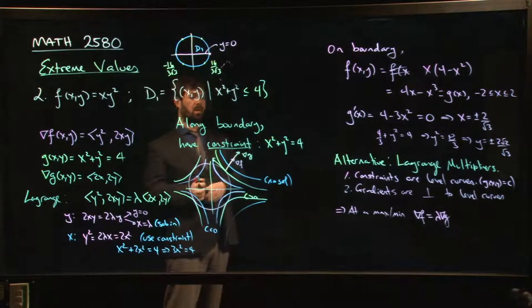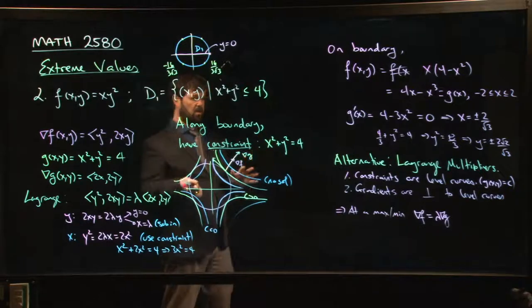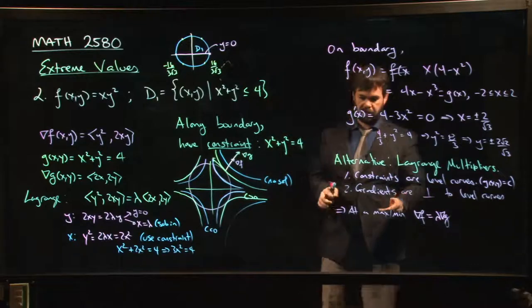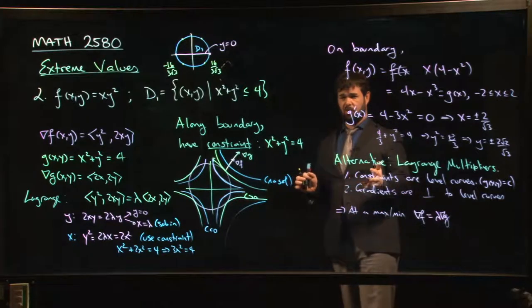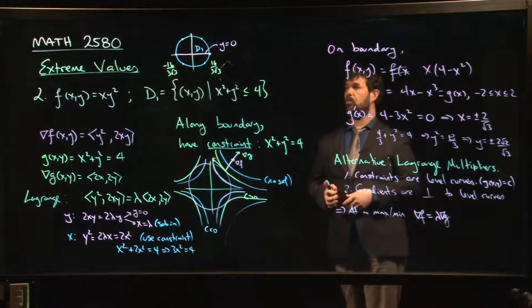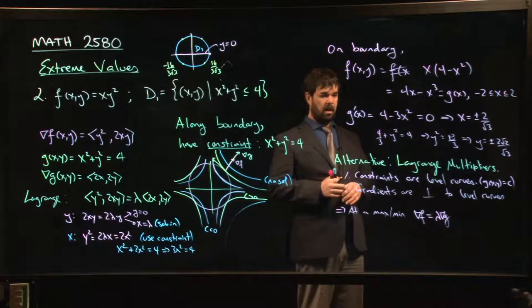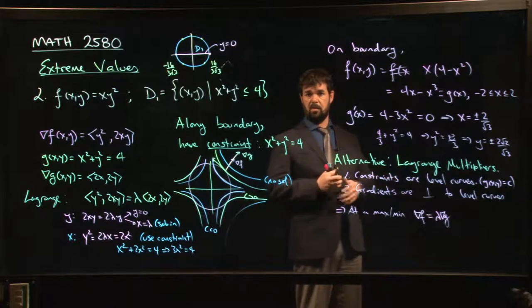We're going to do some more examples now with Lagrange multipliers because this is something which does apply much more generally. You can use Lagrange multipliers for functions of any number of variables. You can even look at situations where you have multiple constraints once you get to three or more variables. So we'll do a couple more Lagrange multiplier examples. And then we'll be ready to move on to integration.